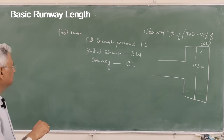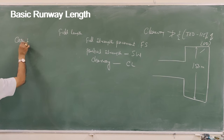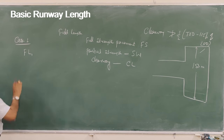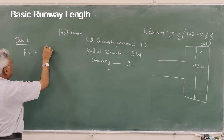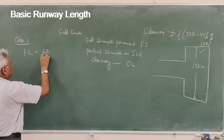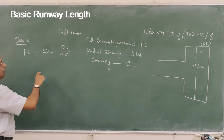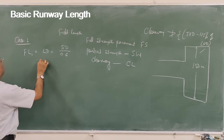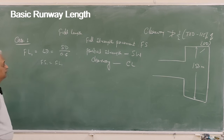Case 1 is the normal landing case. Here the field length FL1 equals the landing distance, which equals stopping distance divided by 0.6. This full length should be full-strength pavement. Therefore Fs1 equals FL1.